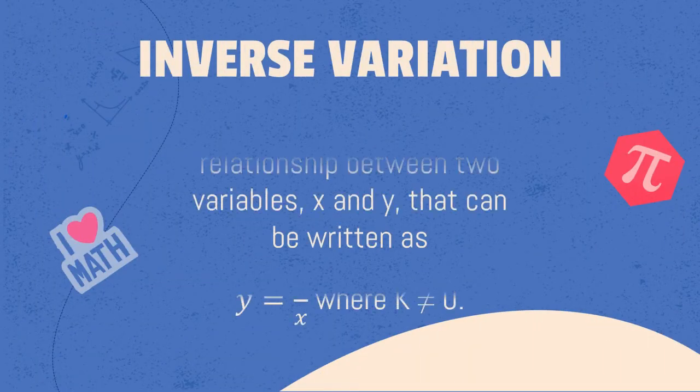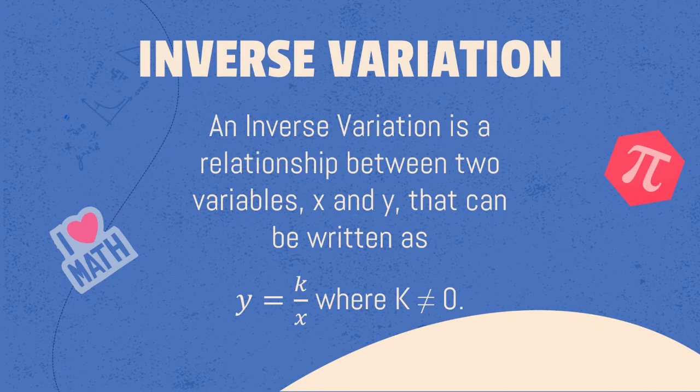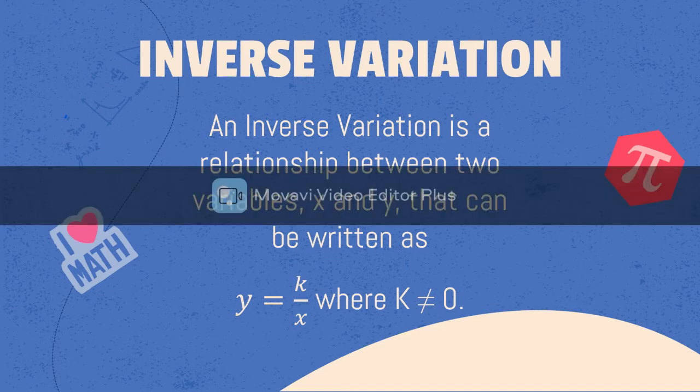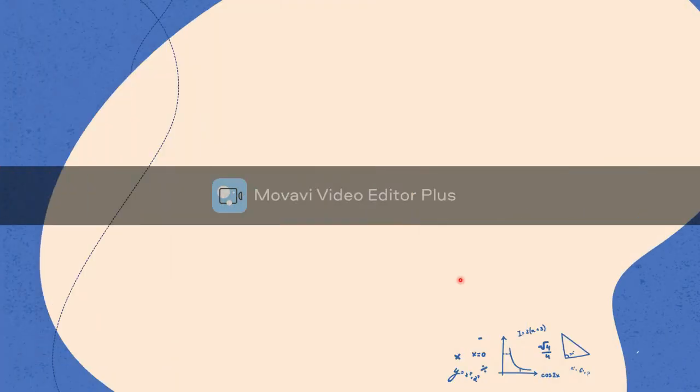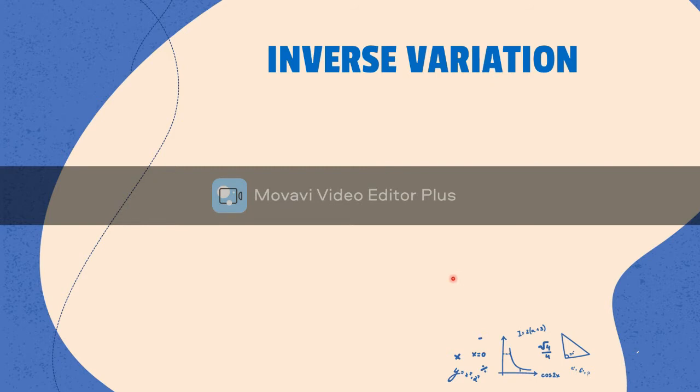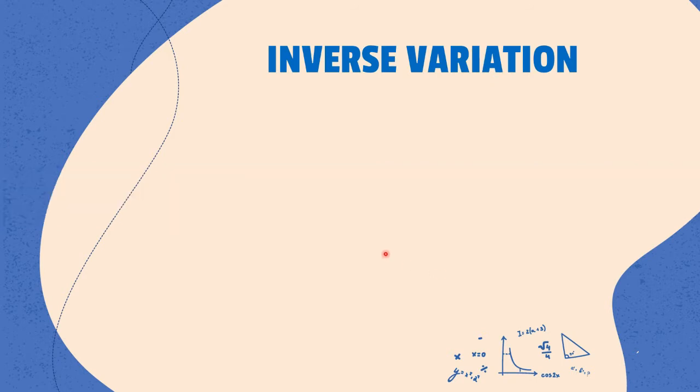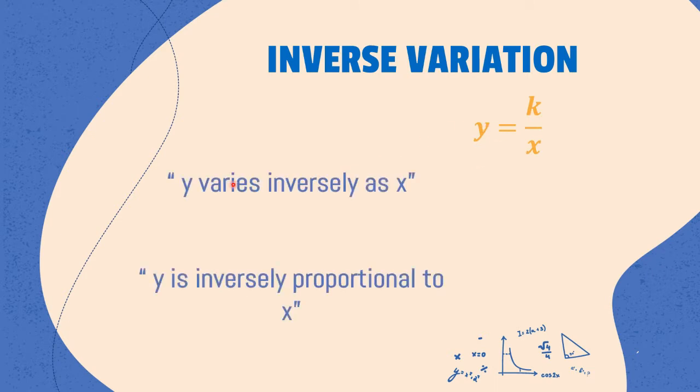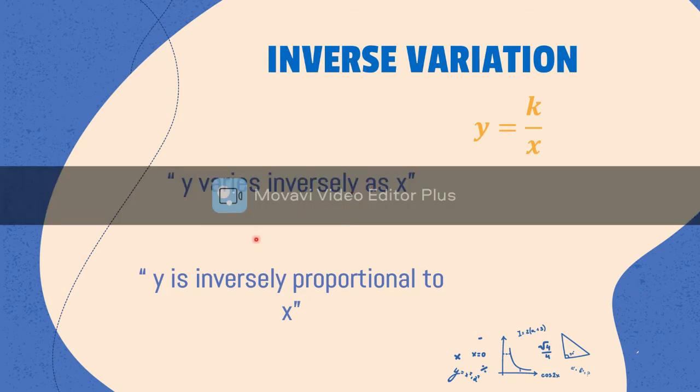Now, inverse variation is a relationship between two variables, x and y, that can be written as y is equal to k over x, where k is not equal to zero. The inverse variation, we have an equation that we use: y equals k over x. This also means y varies inversely as x or y is inversely proportional to x.